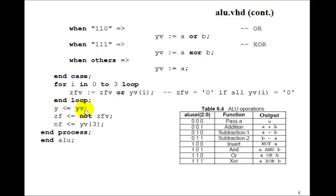Y just gets the Y variable. The negative flag just gets the Y variable sub 3. That is the most significant bit or the sign bit. So if the sign bit is set, the negative flag gets set. So that implements the ALU.